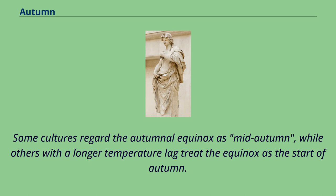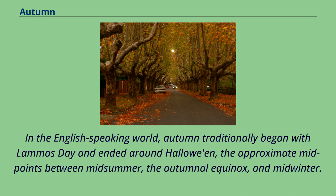Some cultures regard the autumnal equinox as mid-autumn, while others with a longer temperature lag treat the equinox as the start of autumn. In the English-speaking world, autumn traditionally began with Lammas Day and ended around Halloween, the approximate mid-points between mid-summer, the autumnal equinox, and mid-winter.